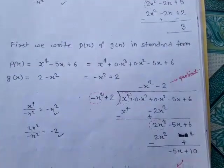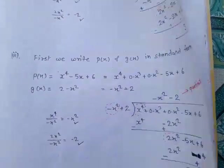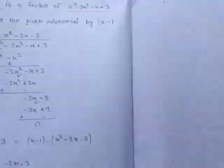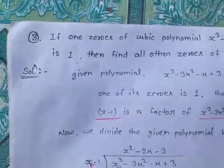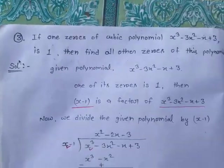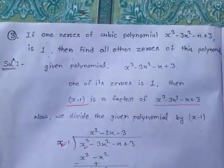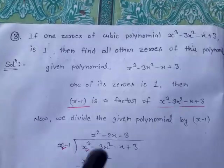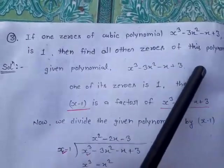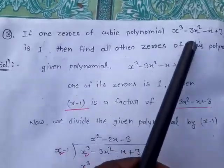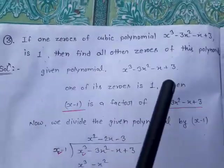Such type of questions you can solve by long division. Now we move to the next question: if one zero of the cubic polynomial x³ − 3x² − x + 3 is 1, then find all other zeros of this polynomial. One zero of this polynomial is 1, and we need to find the other two zeros.